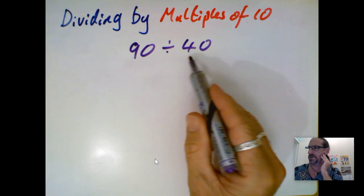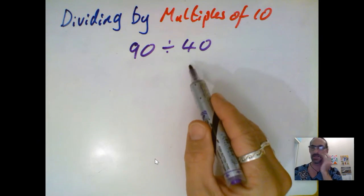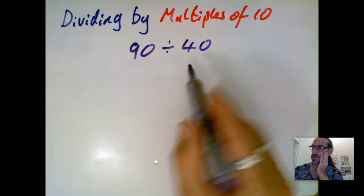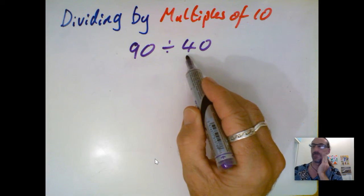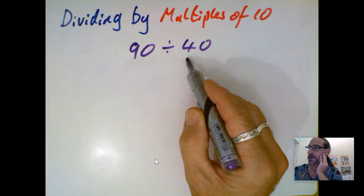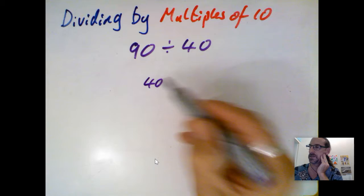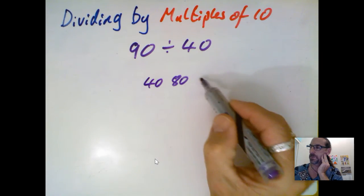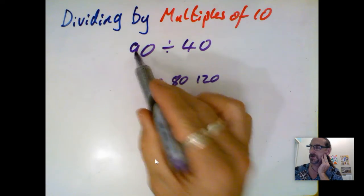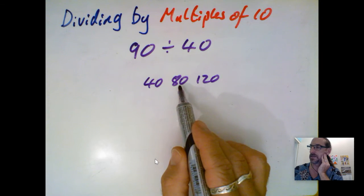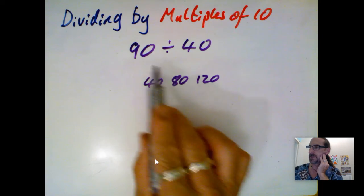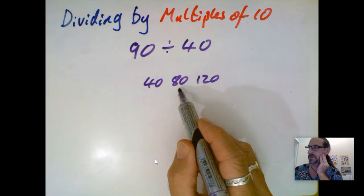What we need to do is count in 40s, and I can see straight away this is a dead easy one. There's a quick example that two 40s are 80, so I've got 40 plus 40 equals 80. 40, 80, if I had another one it would be 120, so I've gone too far over the top. So 80 is the largest number that will go into 90, and it was two lots of 40.